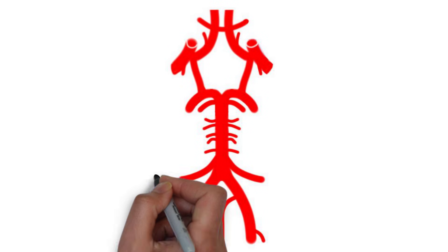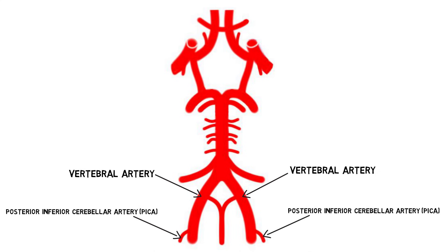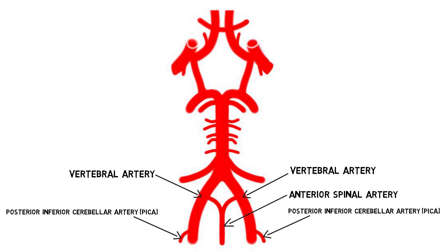The vertebral arteries give rise to the posterior inferior cerebellar arteries, which supply the inferior surface of the cerebellum, and in most brains will also give rise to the posterior spinal arteries, which supply the posterior spinal cord. The anterior spinal artery, which supplies the anterior spinal cord, also branches off of the vertebral arteries. Then the two vertebral arteries come together to form the basilar artery.